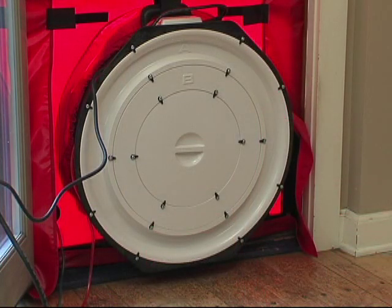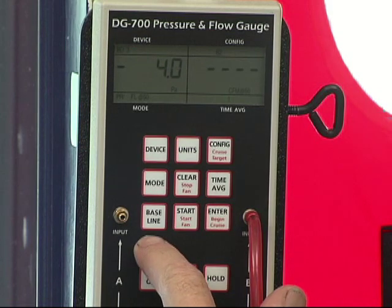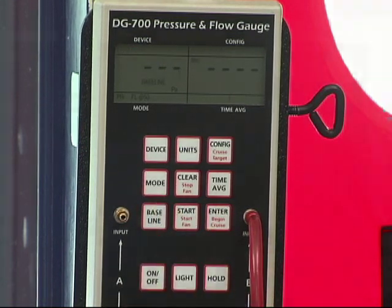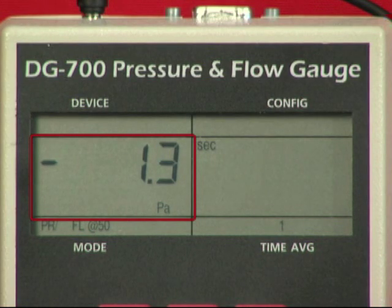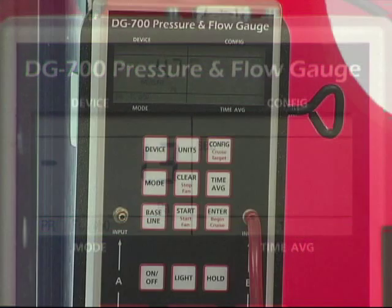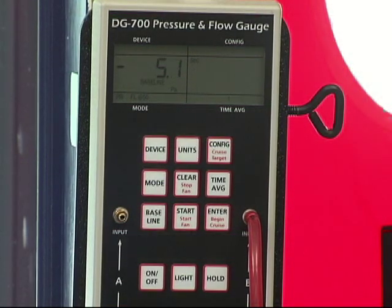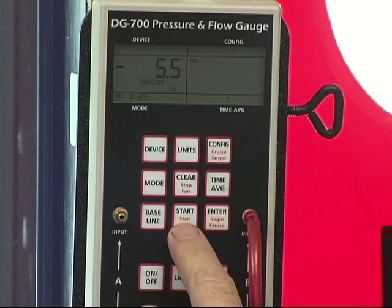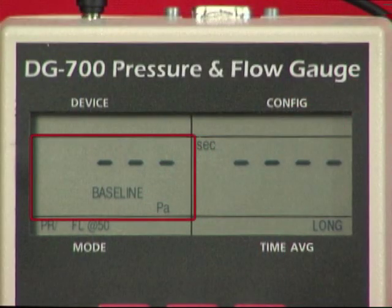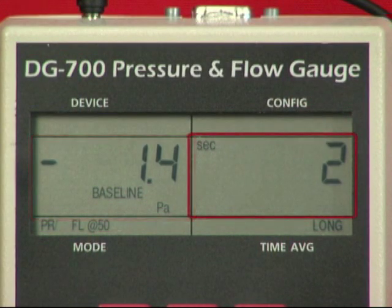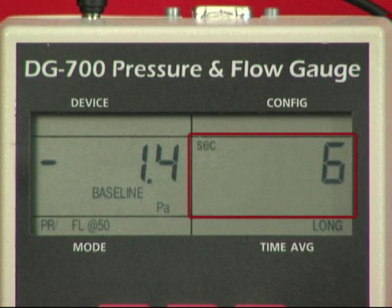With the fan sealed off, begin a baseline building pressure reading from channel A by pressing the baseline button. The word baseline will begin to flash in the channel A display, indicating that the baseline feature has been initiated. Press Start to start the baseline measurement. During a baseline measurement, channel A will display a long-term average baseline pressure reading while channel B is used as a timer in seconds to show the elapsed measurement time.